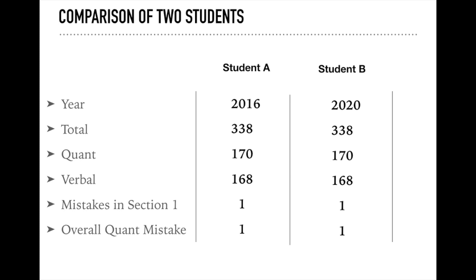A basic comparison I did was pick up two students who took the GRE in 2016 and 2020. They both have the same GRE total scores, same quant scores, same verbal scores. The mistakes they made in their quant section 1 were the same — one each — and the overall quant mistakes were one as well. This gives a very good analysis of what different questions came across in two different time frames.